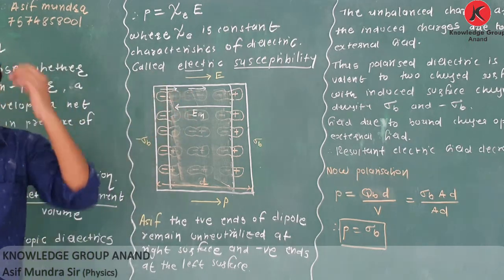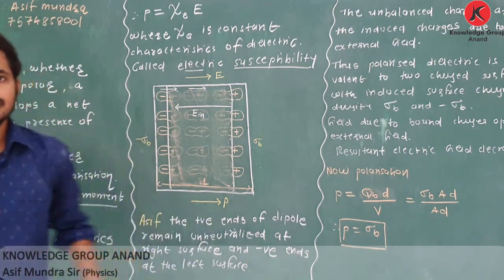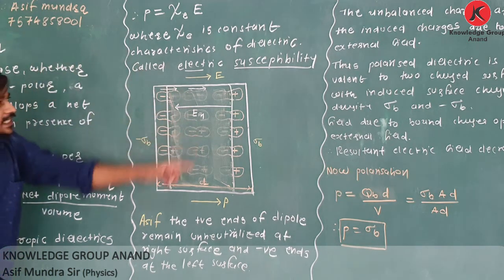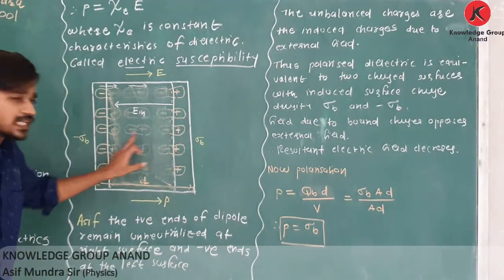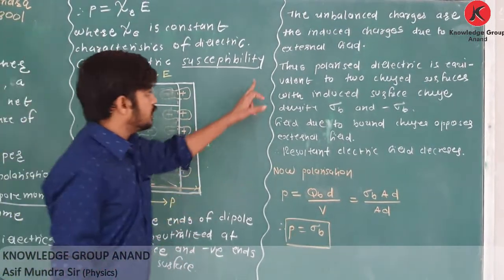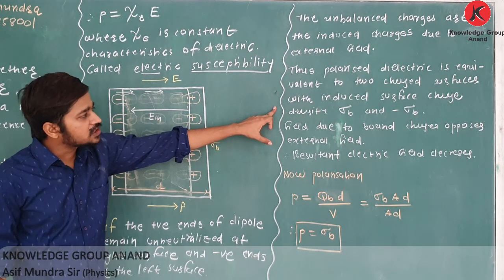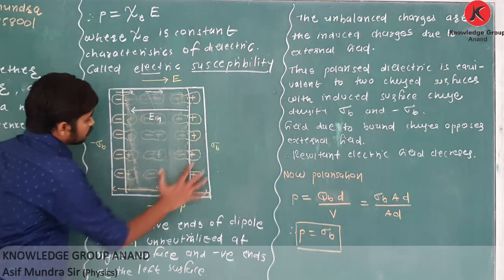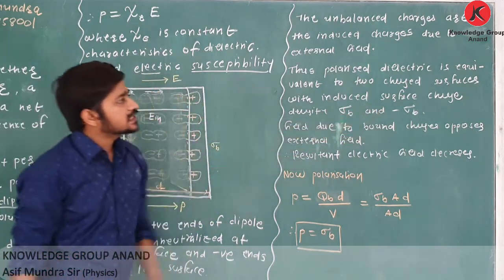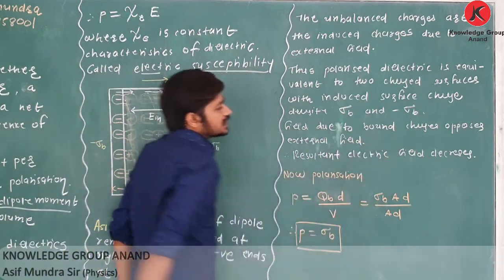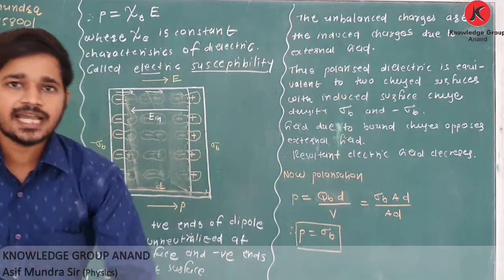These bound charges produce an electric field inside the dielectric that opposes the external field, since both fields are in opposite directions. So the resultant electric field inside the dielectric decreases. The unbalanced charges are induced by the external field. Thus, a polarized dielectric is equivalent to two charge surfaces with induced surface charge density +σb and −σb. The field due to bound charges opposes the external field, so the resultant electric field inside decreases.